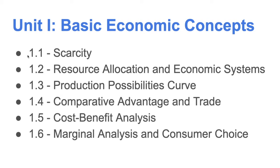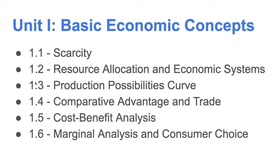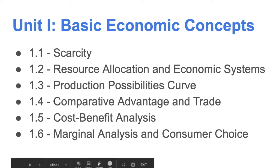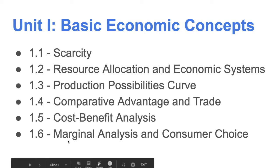Unit 1 has six sections. We've briefly mentioned 1.1, 1.2, and 1.3. Later this week, 1.4, comparative advantage and trade, will look at where the advantages are and how to turn those into profitable, beneficial trade. Then 1.5 covers how we weigh decisions — the costs and benefits associated with any type of market activity or production. And finally, 1.6 covers marginal analysis, a very important foundational tool we'll use all semester, and consumer choice.